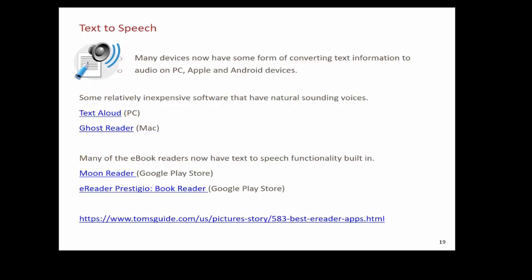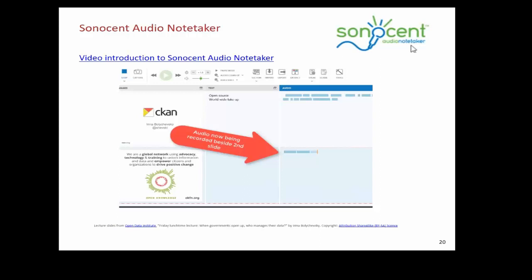Moving along to slide 19 — text-to-speech software. Many devices now have some form of converting text information to audio, usually part of an operating system. Paid-for products are often much better in terms of usability and usually have voices that are easier on the ear. There's Text Aloud for PCs and Ghost Reader for Macs. Don't forget the assistive technology section of the ADCET website for additional information on text-to-speech software. Many e-book readers now have text-to-speech functionality built in. On Google Play Store you can get Moon Reader, and e-reader Prestigio is also available. At the bottom of this slide there's a link to Tom's Guide with a list of the best e-readers on the market.